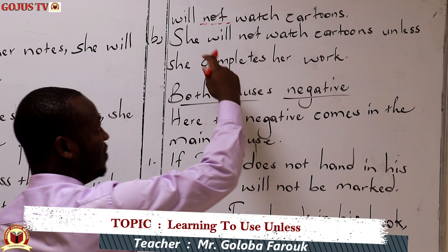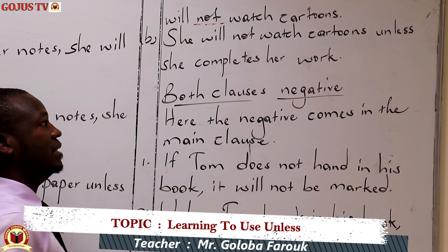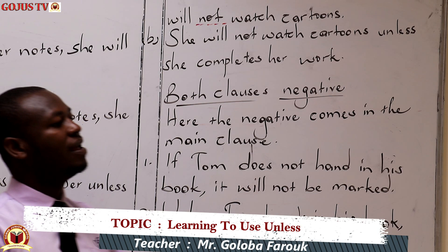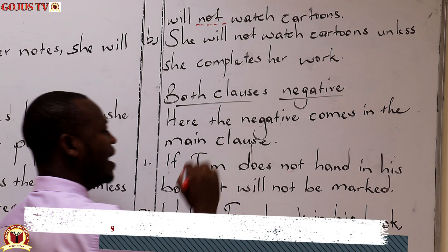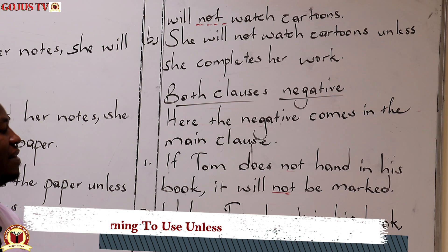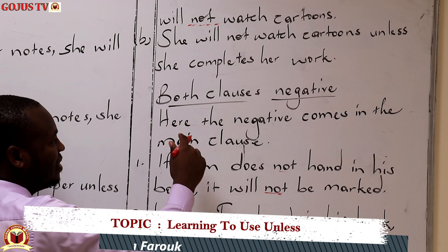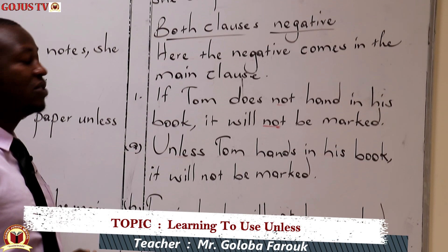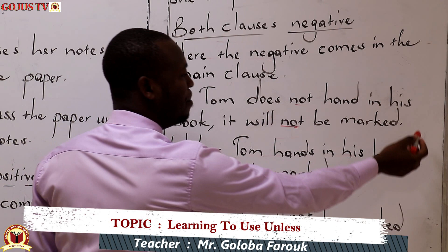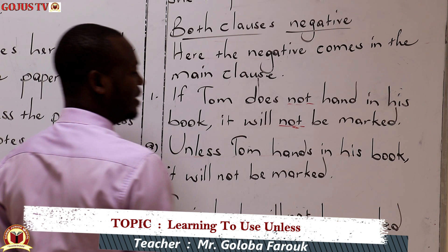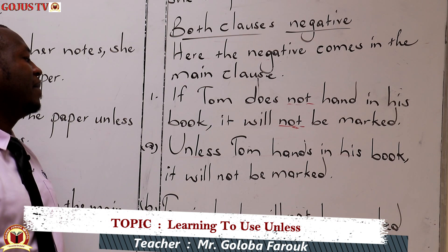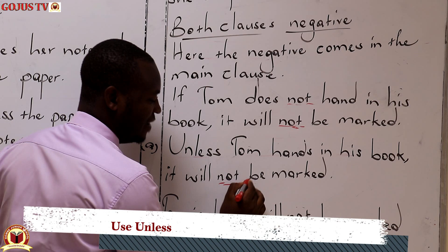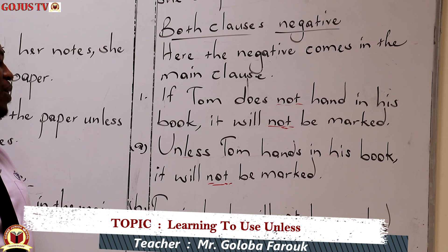We can take ourselves through other examples of having both clauses positive with the same results. When we look at both clauses negative — meaning there is a 'not' in the unless clause and also in the main clause — the negative still comes in the main clause; it doesn't disappear. For example: 'If Tom does not hand in his book, it will not be marked.' One negative will remain: 'Unless Tom hands in his book, it will not be marked.'